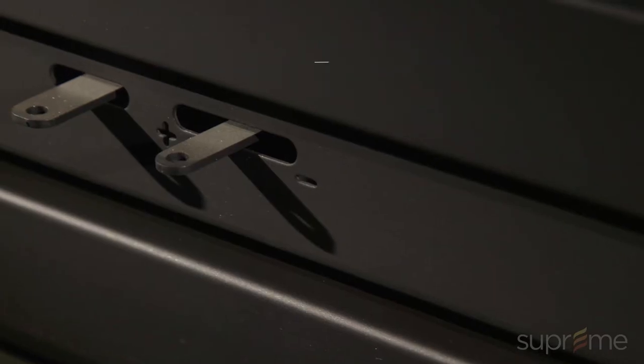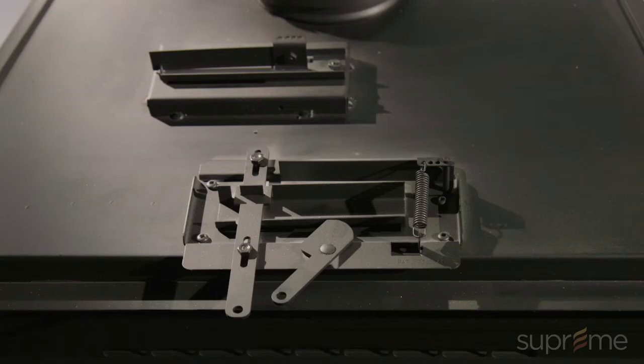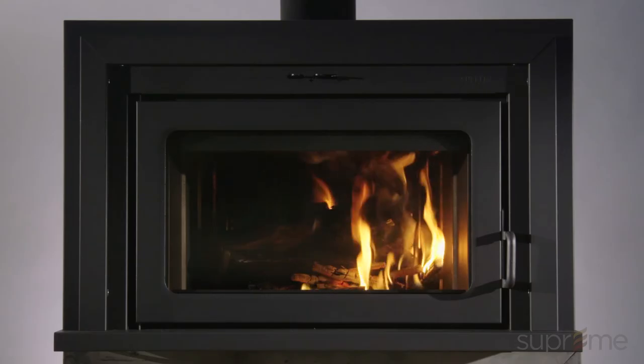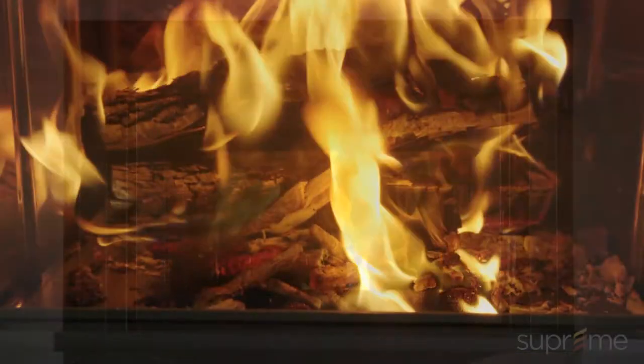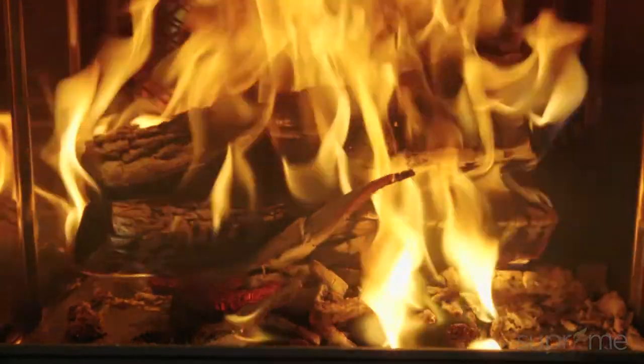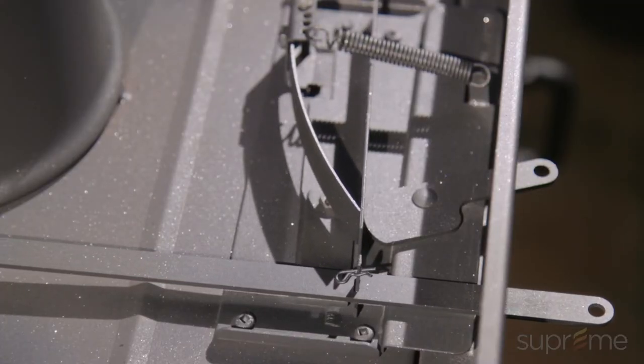When starting a fire or after adding a new load of wood, the user simply pushes the activator handle located on the left. This maximizes the amount of primary air in order to boost combustion. As the temperature increases, the activator will gradually reduce the primary air with the help of a thermostatic bimetal blade.